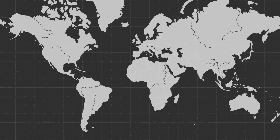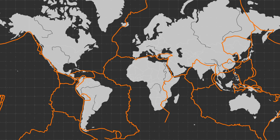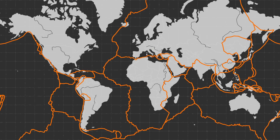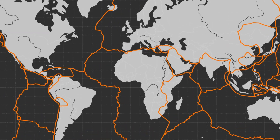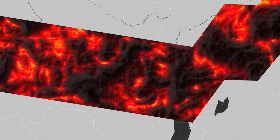This is a map of the Earth. I'm almost certain you already knew that, but what I want to show you is this: these are tectonic plates. They're a bit like jigsaw pieces that make up the Earth's crust, and they're essentially floating on molten rock below them.